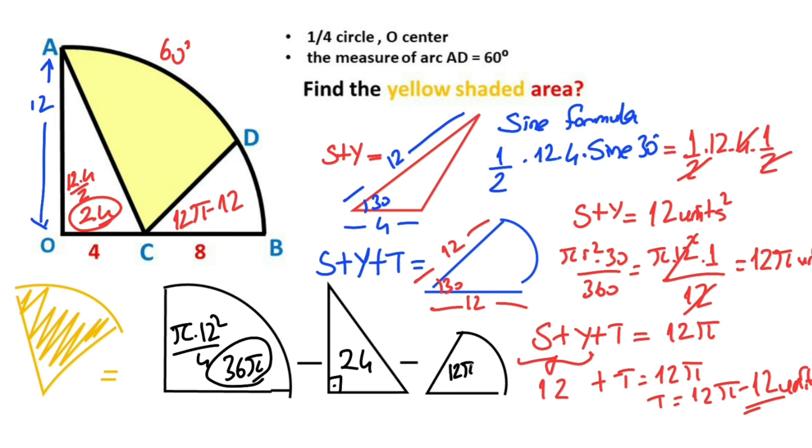So the yellow shaded area equals 36π minus 24 minus 12π plus 12, which equals 24π minus 12 units squared.